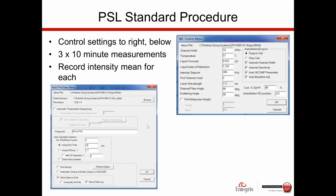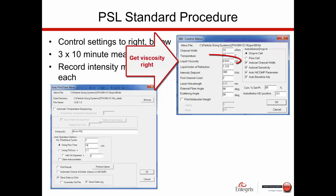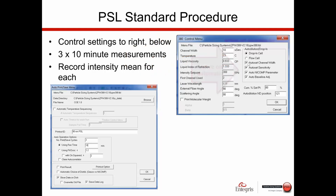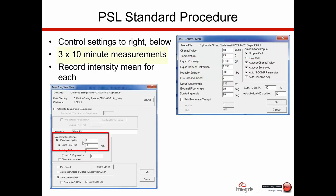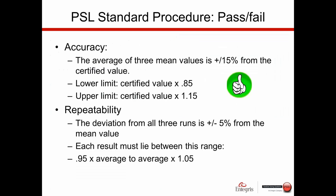The recommended system settings on the NICOMP for these measurements use the viscosity of water as the standard value. All selections should be left on automatic unless you know something specific about the sample. The system should be set up to do three 10-minute measurements — don't be in a hurry when doing dynamic light scattering measurements. Shorter measurements can be used for very narrow distributions, but three 10-minute measurements represent best practice.